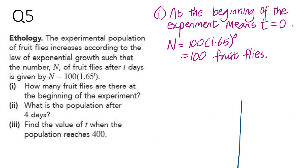Now let's go on to dealing with fruit flies. You can see how real-life these logarithmic functions can be. We are given a formula to calculate the number of fruit flies after a certain number of days. We need to calculate the original number of fruit flies at the beginning of the experiment. At the beginning means when t is 0. Substituting t equals 0 gives 1.65 to the power of 0 equals 1, so 1 times 100 is 100. At the beginning you have 100 fruit flies.